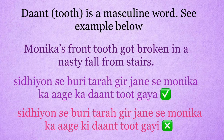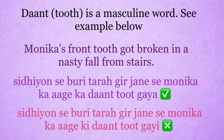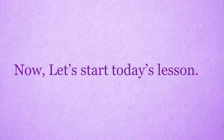Daanth, tooth, is a masculine word. See example below. Monika's front tooth got broken in a nasty fall from stairs. Right sentence: Seedhiyon se buri tarhan gir jane se, Monika ka aage ka daant toot gaya. Wrong sentence: Seedhiyon se buri tarhan gir jane se, Monika ki aage ki daant toot gai. Now you have understood the pattern of this video. It's time to start today's lesson. Let's get started.